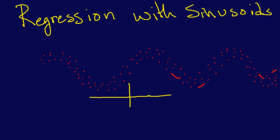Just as we did before with lines, with polynomials, we can do least squares regression with sinusoids as well.